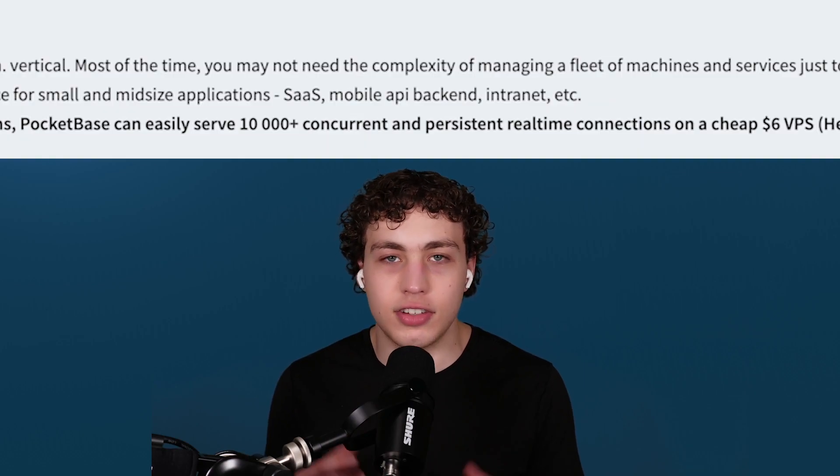So you have this box in the cloud serving all your requests. In Go, you can scale that really easily — Pocketbase's documentation shows that a tiny little $6 instance can serve around 10,000 concurrent requests. You couldn't do that in TypeScript. Go and TypeScript are just not comparable performance-wise, and if you're comparing them by performance, that's just wrong.